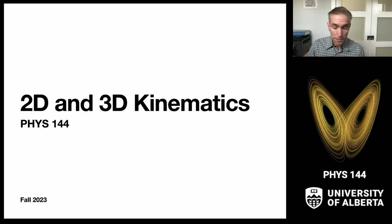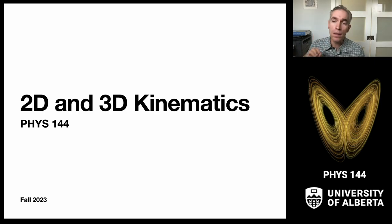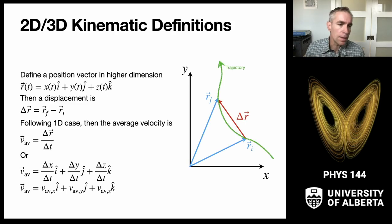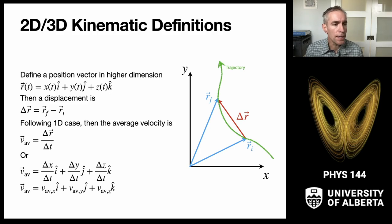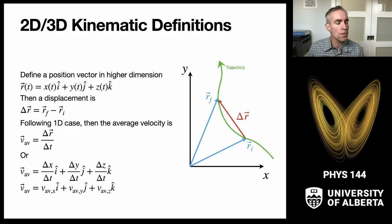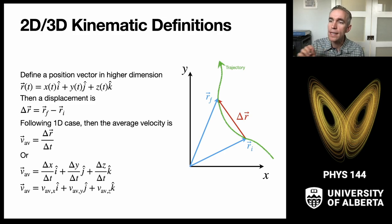Fortunately, a lot of the math looks a lot like one dimension. The way we define our kinematics in two and three dimensions is to define it as the vector sum of the kinematics in the individual directions.